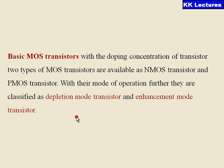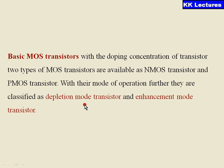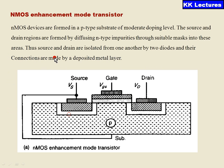A MOS transistor always consists of a metal, oxide, and a semiconductor. It is a three-terminal device and it is a voltage-controlled current device. As I said, there are mainly two types: the depletion mode transistor and the enhancement mode transistor. First, let us discuss about the NMOS enhancement mode transistor.